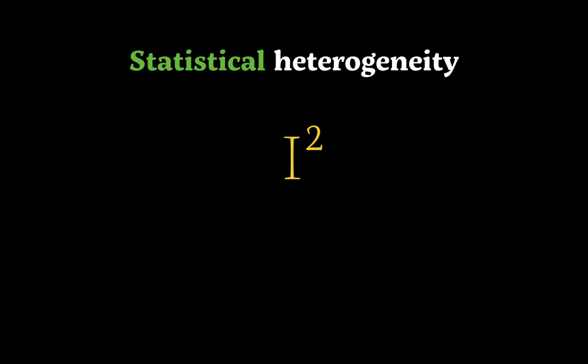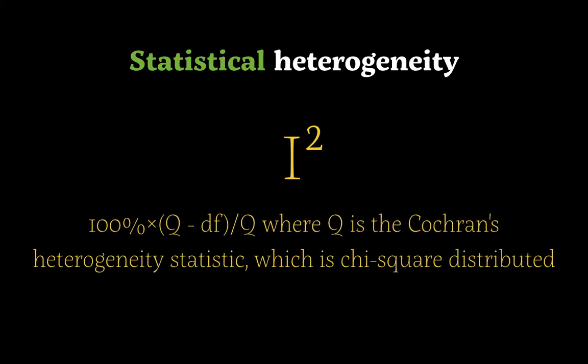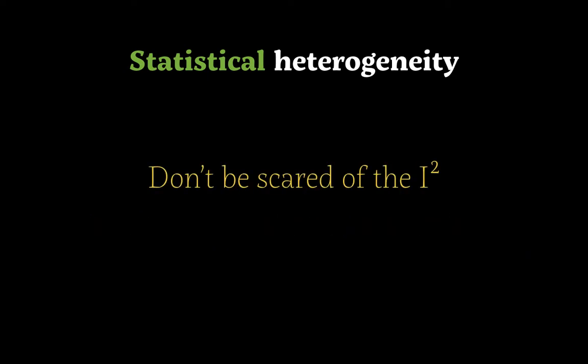When talking specifically about statistical heterogeneity, you will always find an I-squared statistic. I-squared is a very important statistic created by Cochrane. As Higgins explained in several of his papers, it describes the percentage of variation across studies that is due to heterogeneity rather than purely chance. The formula uses the degrees of freedom and Cochrane's heterogeneity statistic Q.